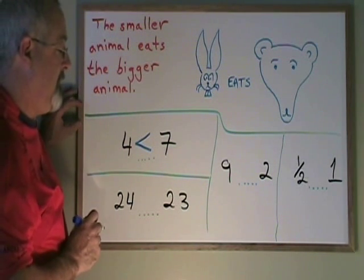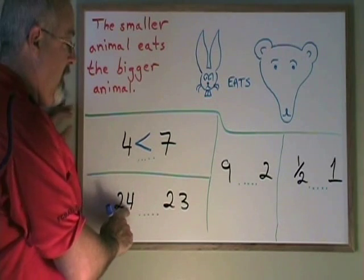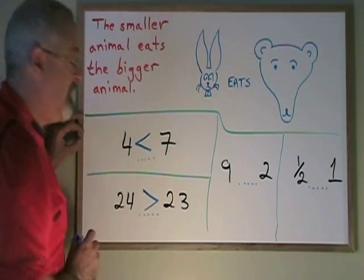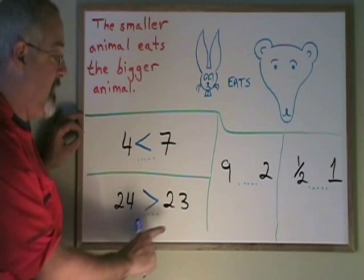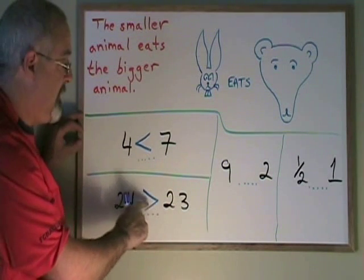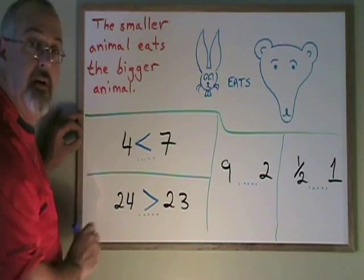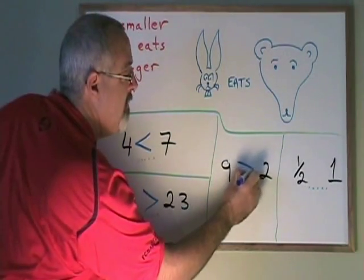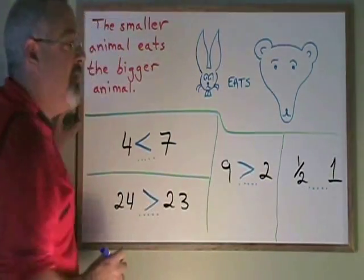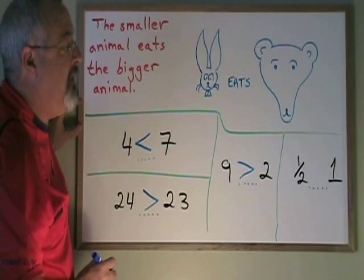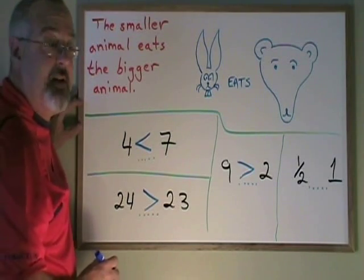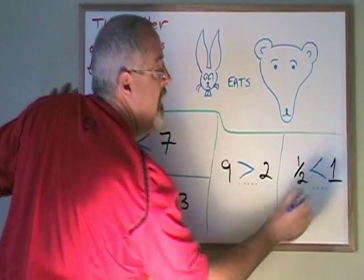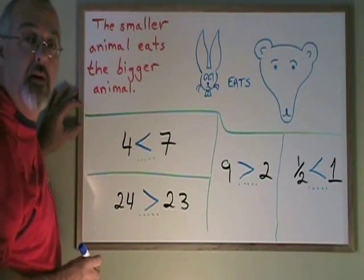Let's do some more examples. 24 is greater than 23, so we put our symbol like this, and it looks like the smaller 23 is eating the bigger 24. 9 is greater than 2, so the 2 looks like it's eating the 9. And 1 half is less than 1, so the 1 half looks like it's eating the 1.